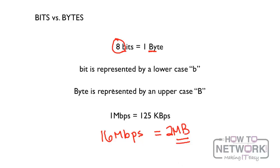Also, just while we're here — the 'm' and the 'k' are all math. So 1 kilobyte would be a thousand bytes, 1 megabyte would be a thousand kilobytes, 1 gigabyte would be a thousand megabytes, et cetera.